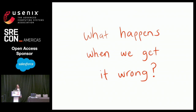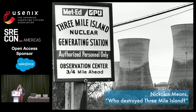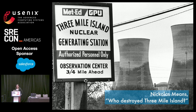What happens if we get it wrong? We get things like what happened at Three Mile Island. This is a really fantastic talk from Nicholas Means. A bunch of very smart people were put in charge of keeping a nuclear power generator reactor going. One weird thing happened, and then a whole bunch of cascading things happened, and before you knew it, the generator was completely out of commission.